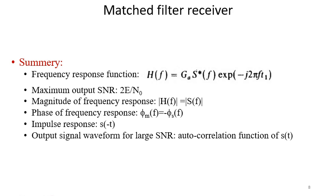Now try to understand the summary. Frequency response function of the matched filter can be written as H(f) equal to G_A S*(f) exponential minus j2πft_1. Maximum output SNR is 2E/N_0 where E is the signal energy.